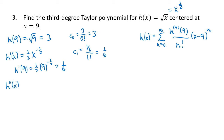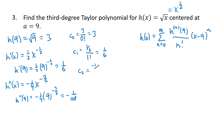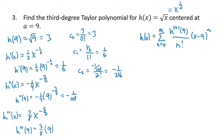For c2, h″(x) = (1/2)(−1/2)x^(−3/2) = −(1/4)x^(−3/2). Plugging in 9: −(1/4)·9^(−3/2) = −1/108, so c2 = (−1/108)/2! = −1/216. For c3, h‴(x) = (3/8)x^(−5/2). Plugging in 9: (3/8)·9^(−5/2) = 1/648, so c3 = (1/648)/3! = (1/648)/6 = 1/3888.